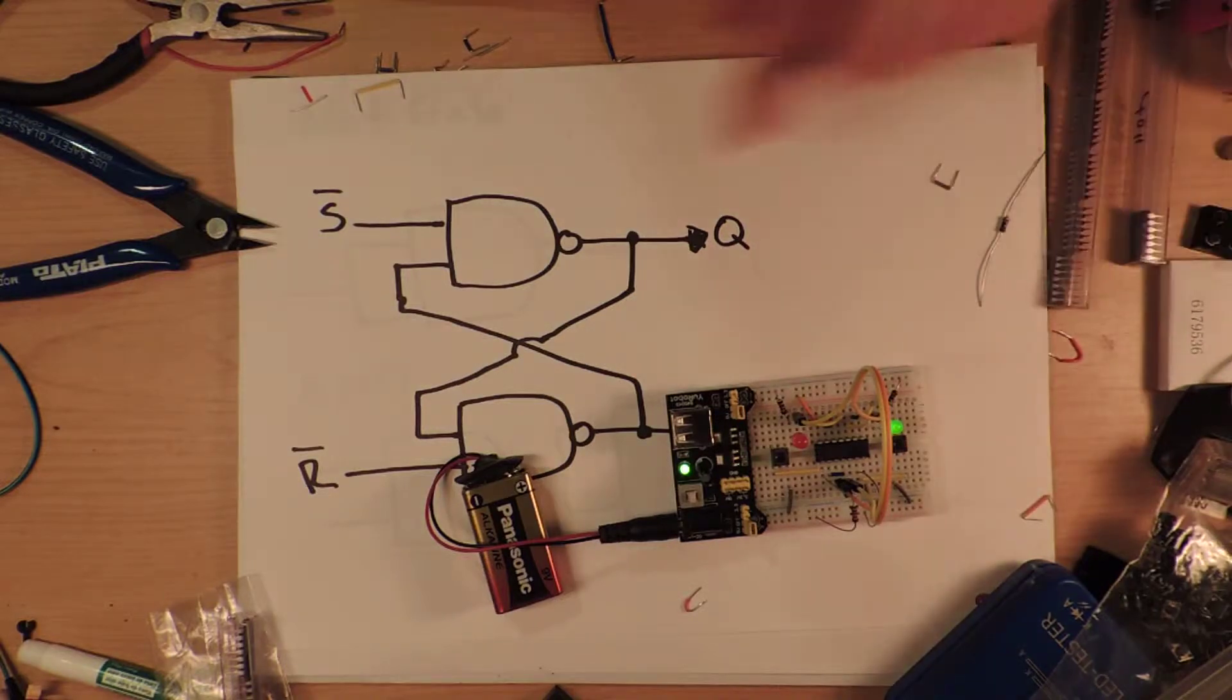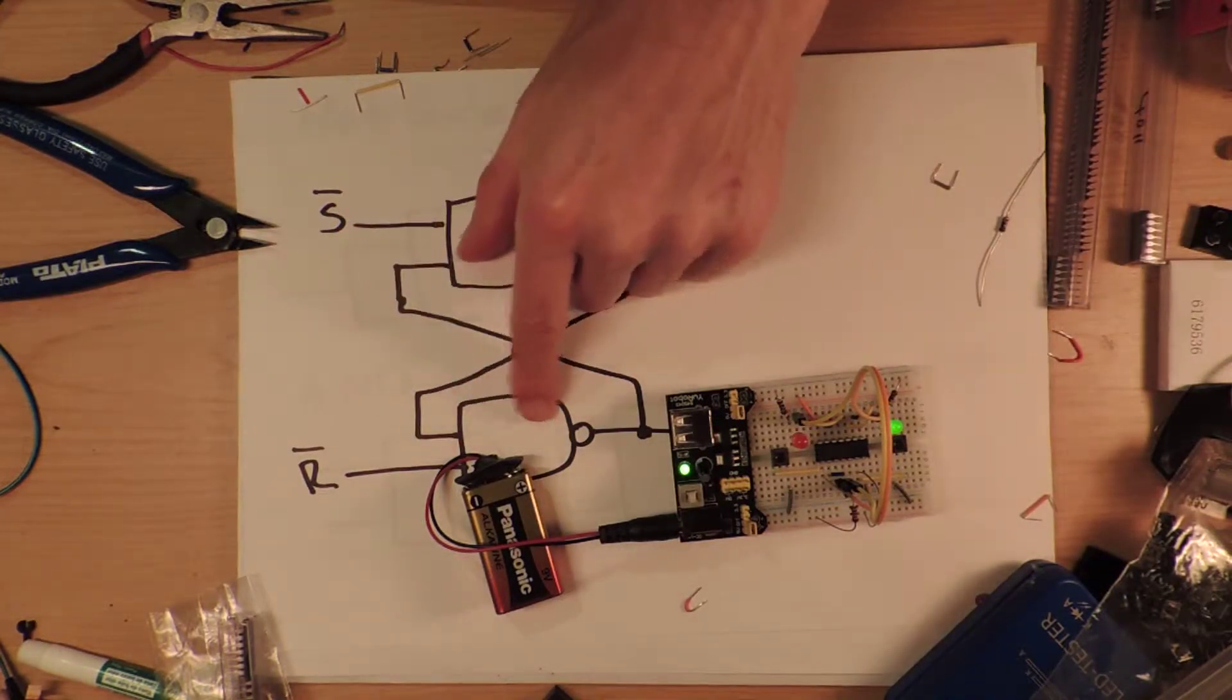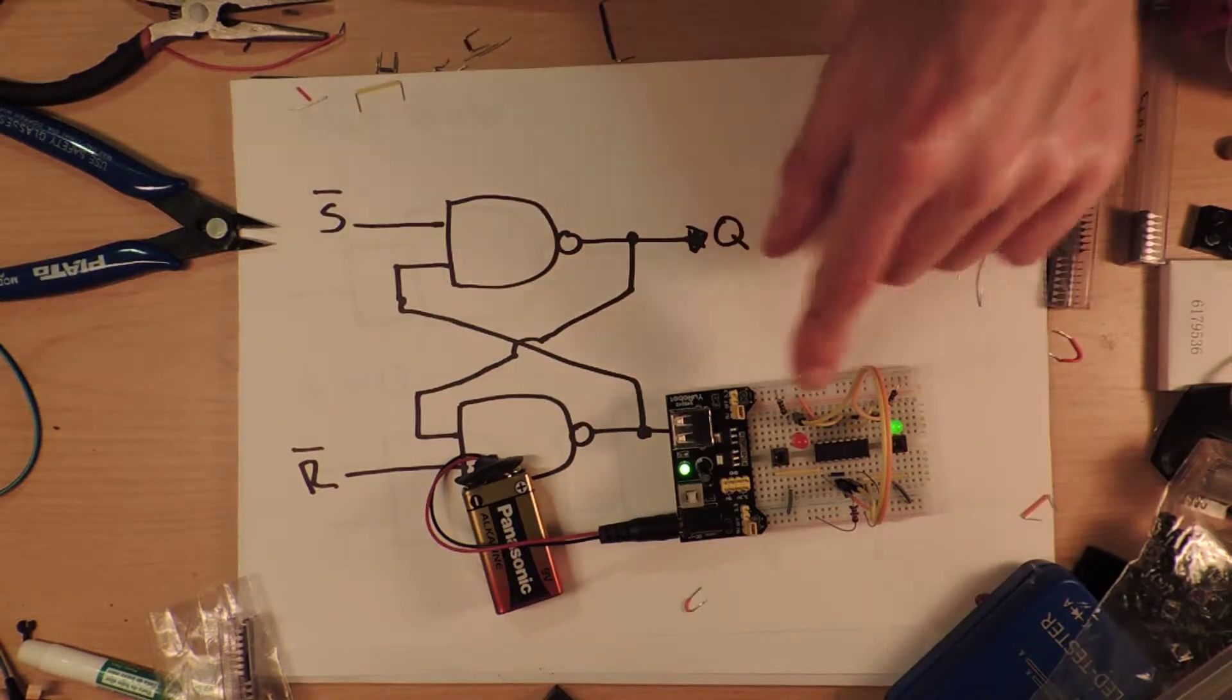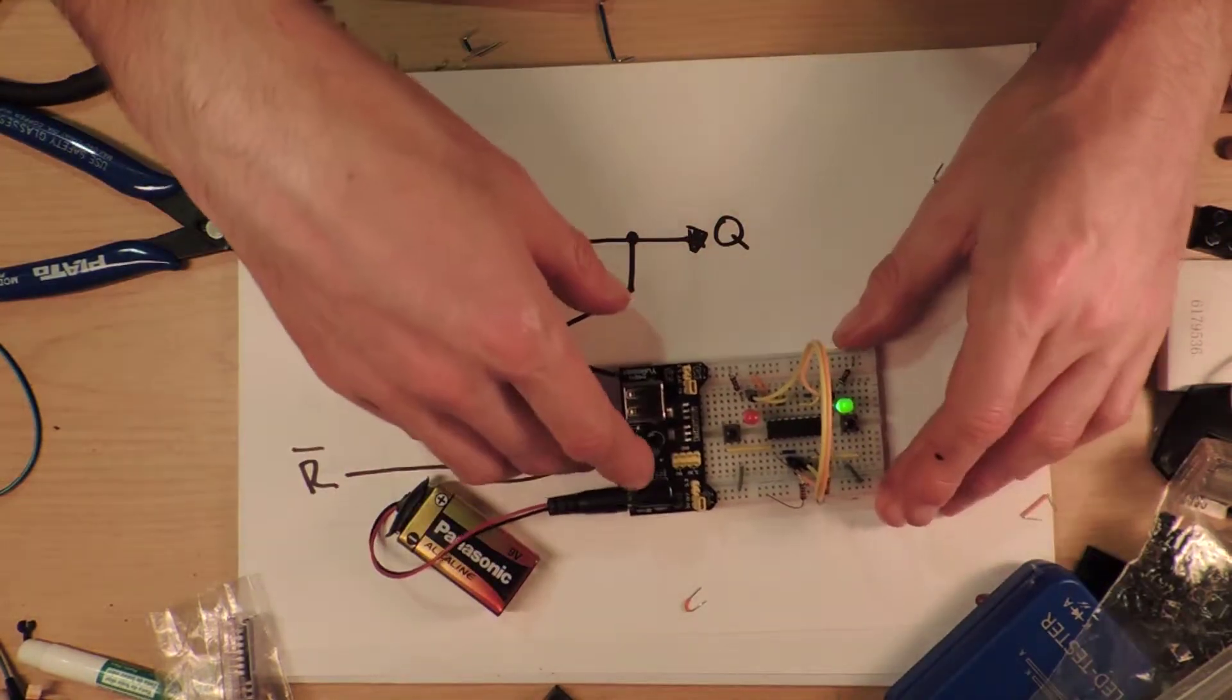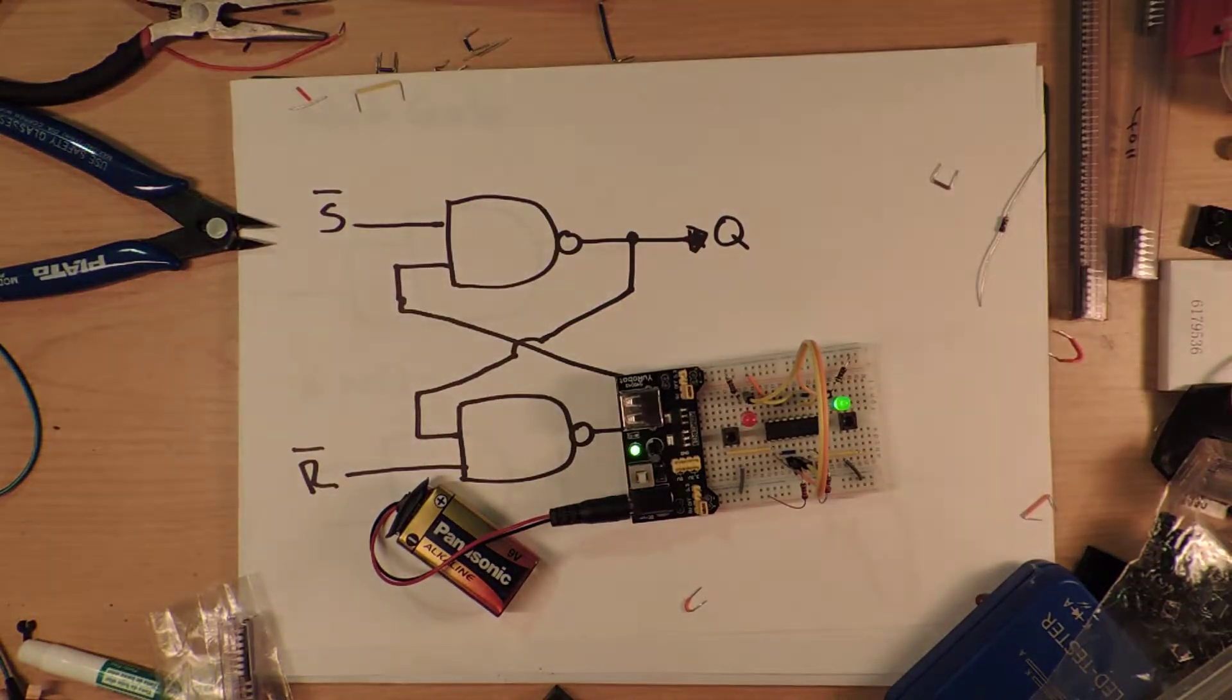So I wanted the result was that when you put a high voltage on here, that would set this one, and when you put a high voltage on here, that would set the other one. But having thought about it a lot and gone through the circuit, I realized that actually it doesn't work that way at all.